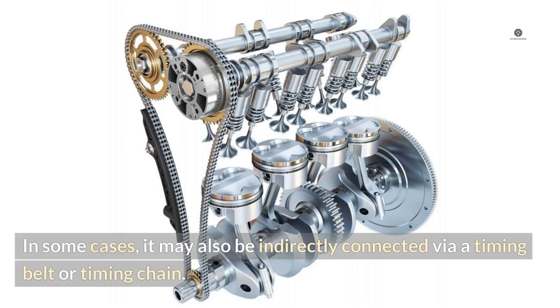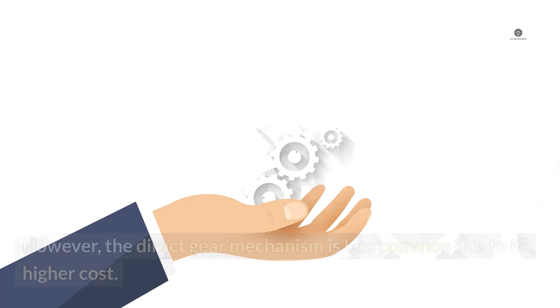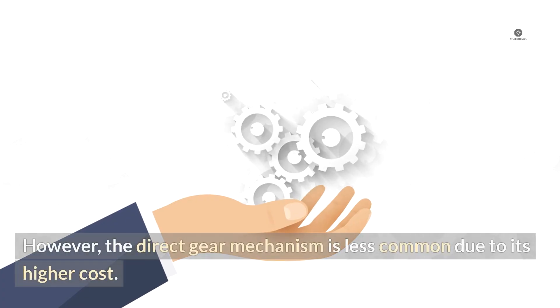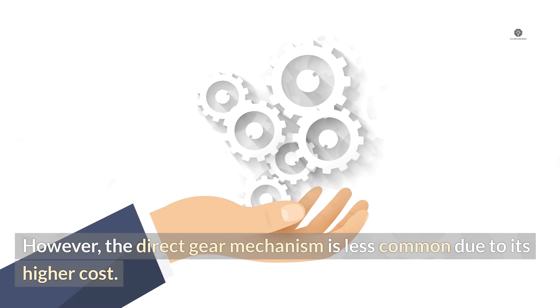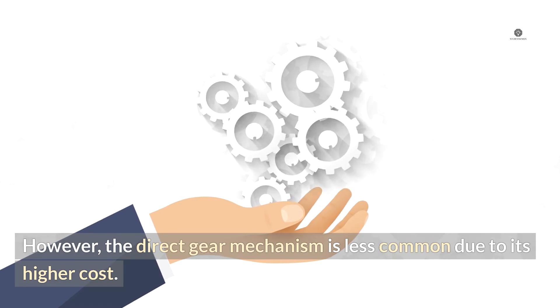In some cases, the camshaft may also be indirectly connected to the crankshaft via a timing belt or timing chain. However, the direct gear mechanism is less common due to its higher cost.